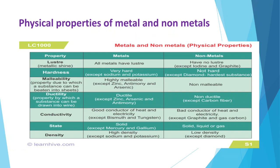The next physical property is ductility. Metals are used to make thin wires, for example electrical wires. You must have seen the net of iron as well. But non-metals cannot be used in this way — it means they do not show ductile nature.